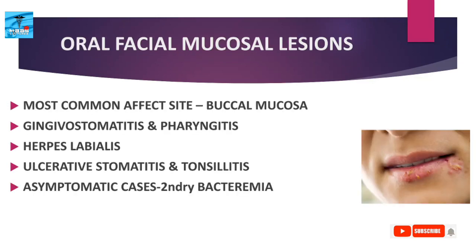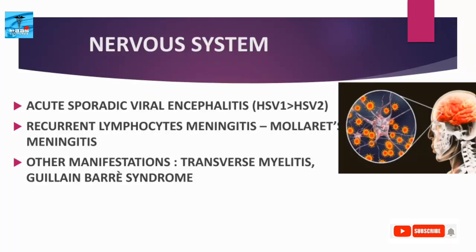Orofacial mucosal lesions are the most common manifestations of HSV. The most commonly affected site is the buccal mucosa, and the most frequent primary lesions are gingivostomatitis and pharyngitis. The most frequently recurring lesion is herpes labialis — painful blisters near the lips. Other lesions include ulcerative stomatitis and tonsillitis. Many cases are asymptomatic but can predispose to secondary bacterial infections.